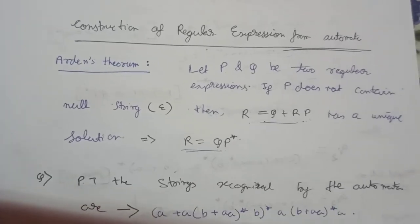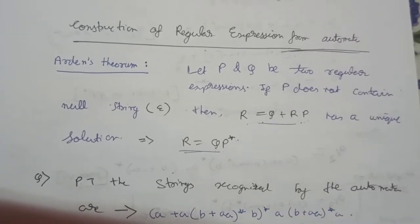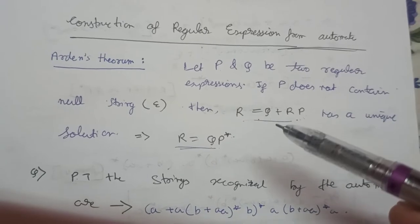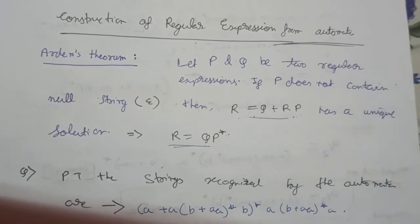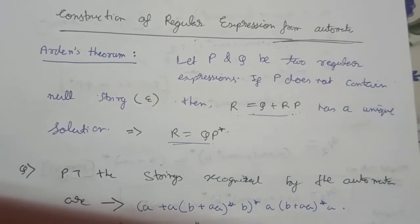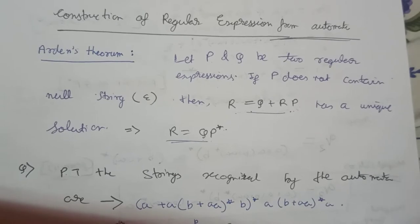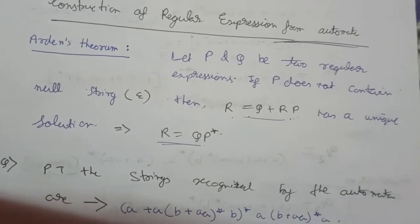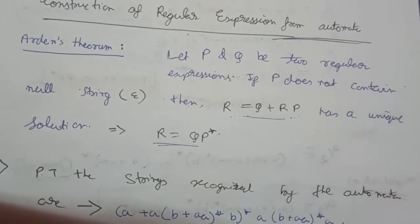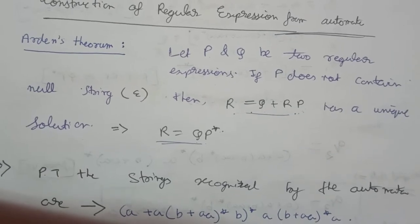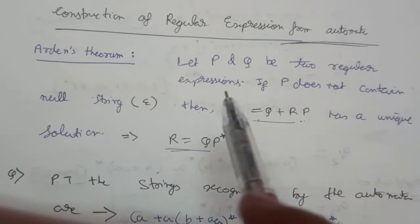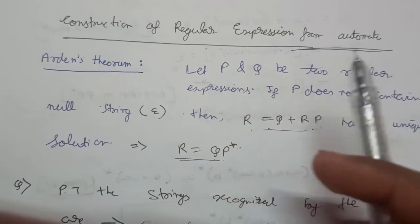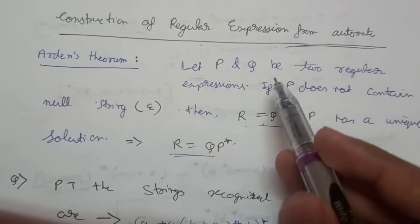Welcome to another lecture of our automata playlist. In our previous lecture we learned how to form a regular expression, and in our previous module we learned how to form an automata. In today's lecture we will see how to convert an automata to a regular expression. For that we need a theorem called Arden's theorem. First we'll learn this and then check with an example.